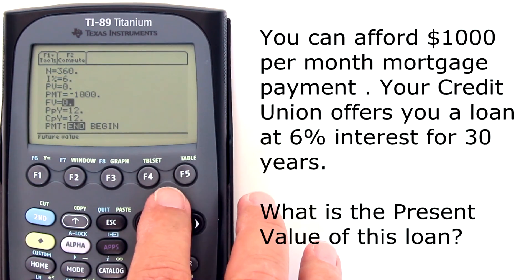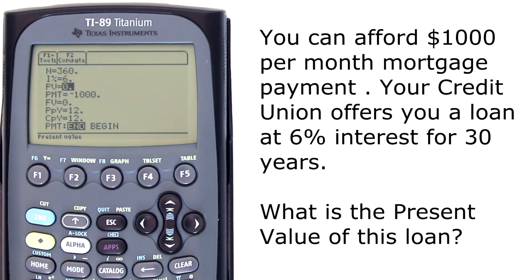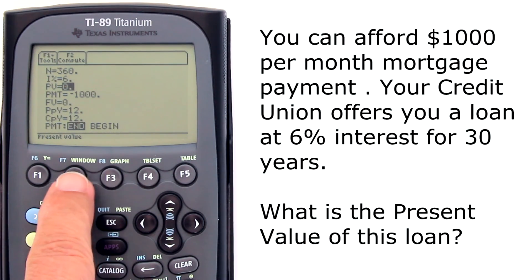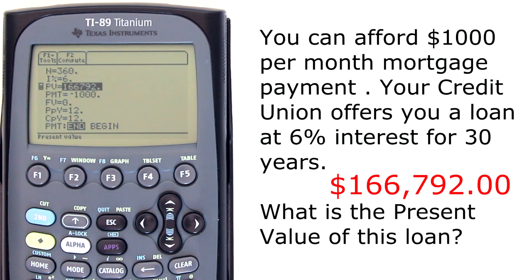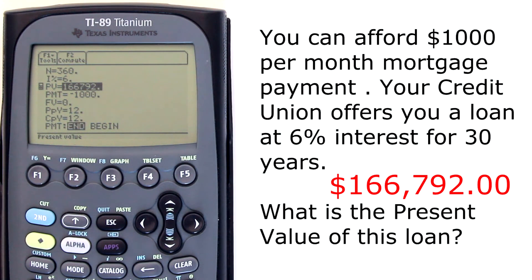Go up to present value, highlight it, and press the F2 key to calculate. There is the answer: $166,792. Notice the calculator symbol next to PV — present value — which means this is the value that was just calculated.